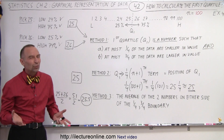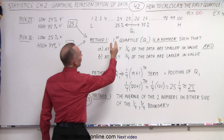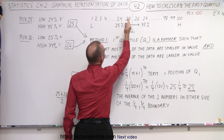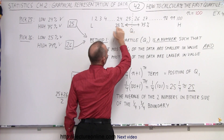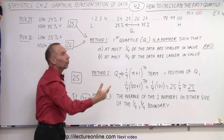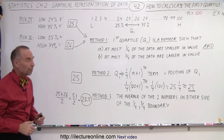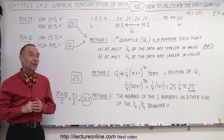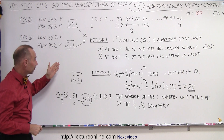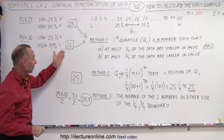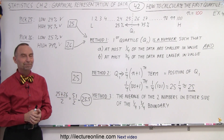Most people probably want to pick 25 because it's the 25th data point out of 100, which is close to 25%. So most people will probably pick 25. But you can legitimately pick 25, 25.5, or 26. And that is how it's done.